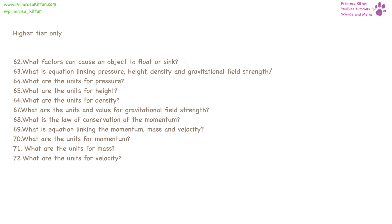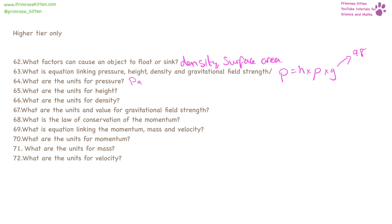When talking about floating or sinking, we need to look at the density and the surface area. Pressure is equal to height times density — which is rho, a lowercase Greek letter that looks like a P but isn't — times gravitational field strength. Gravitational field strength is 9.8.